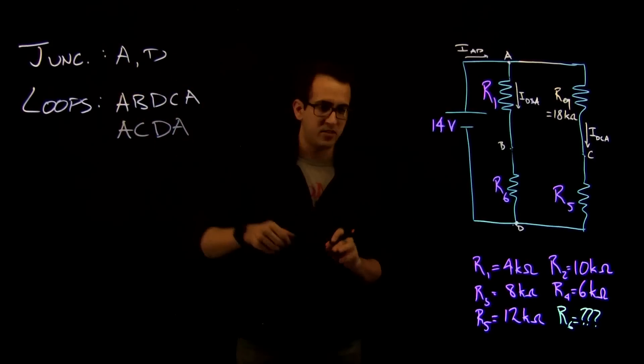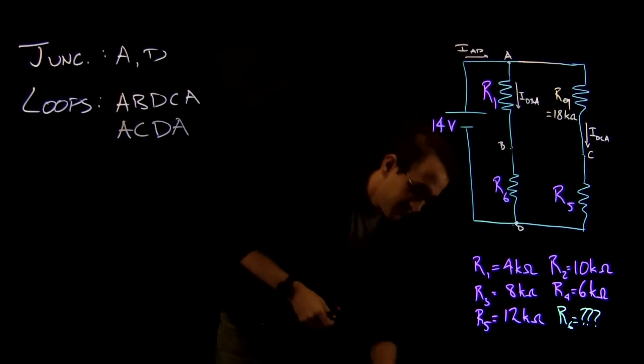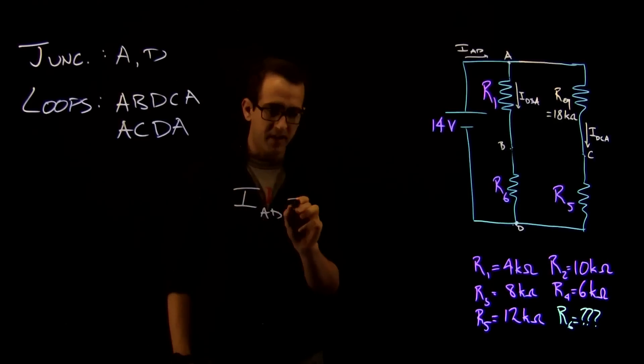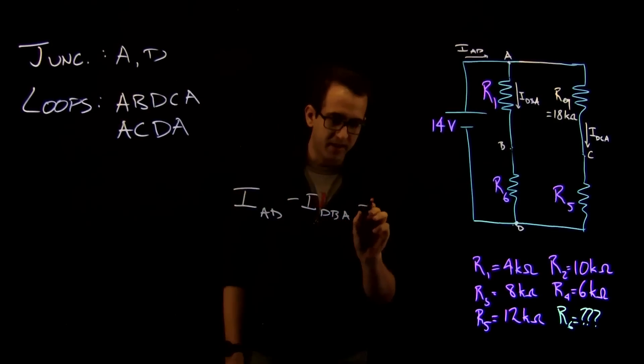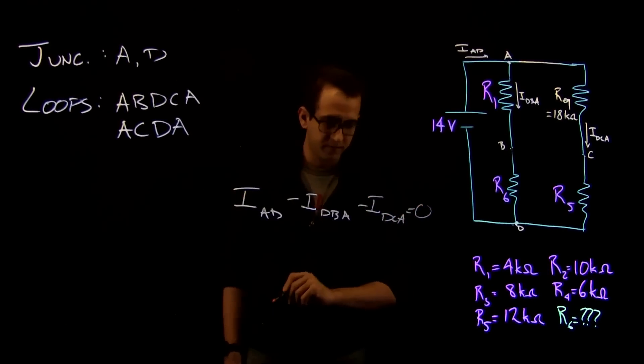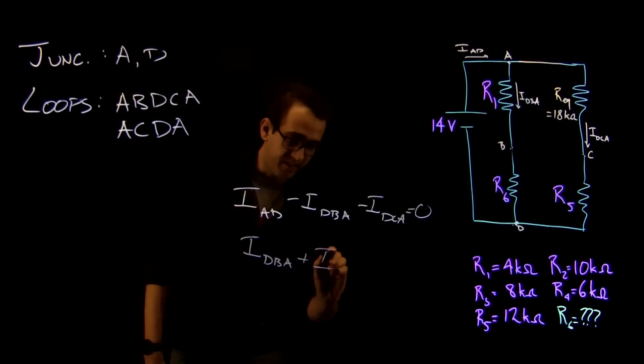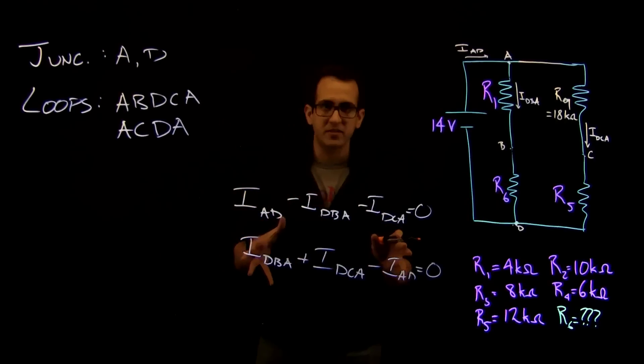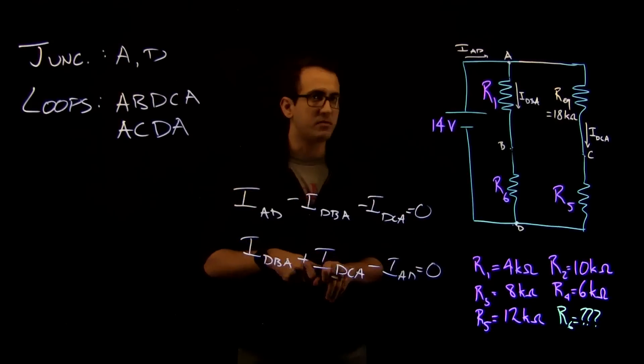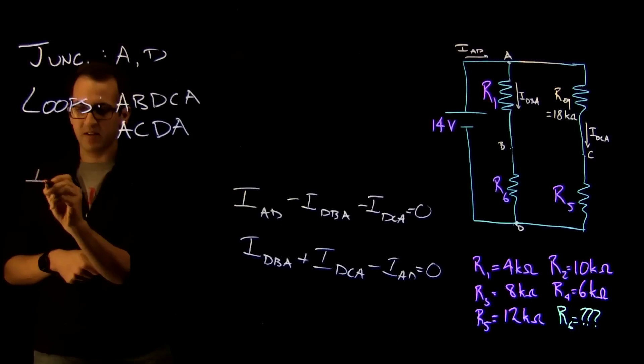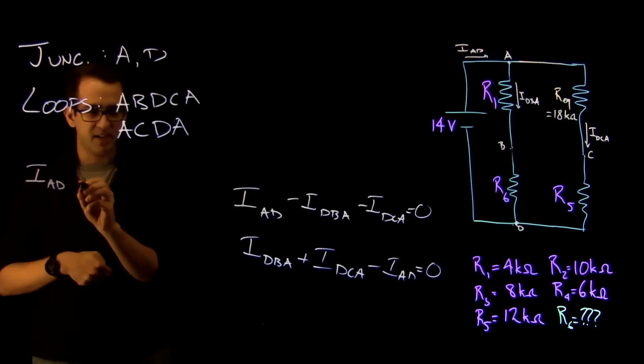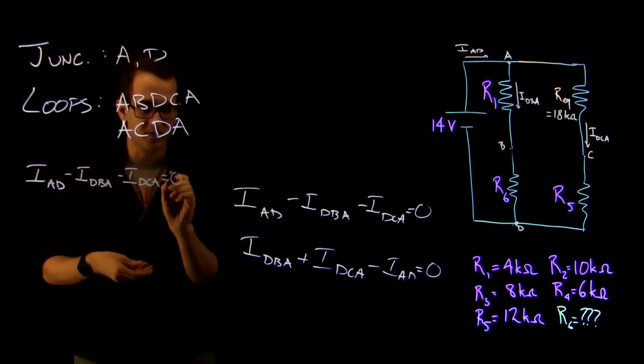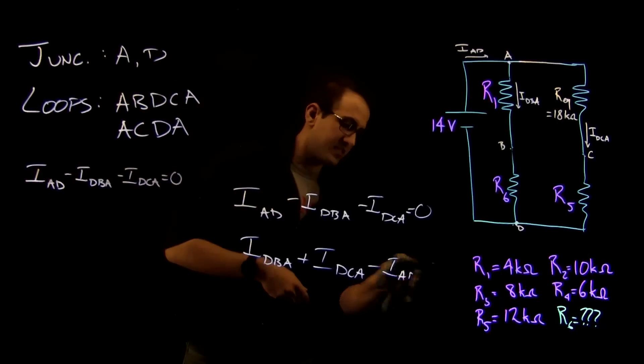So we have two independent loops. We have two junctions, only one of which is independent. And let's start off by writing down our junction equations. So our junction equations are IAD minus IDBA minus IDCA equals 0, and IDBA plus IDCA minus IAD equals 0. This is just the first one, and that's the junction rule we're going to use.